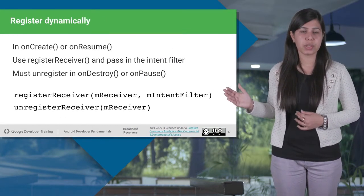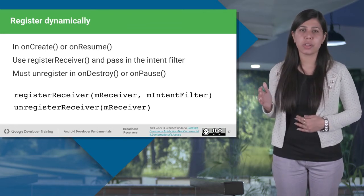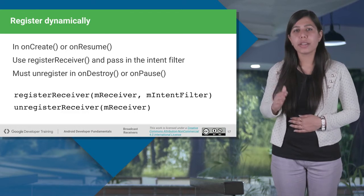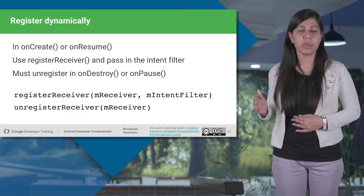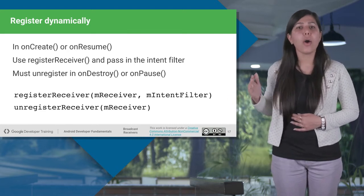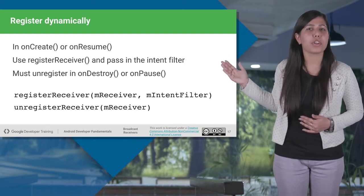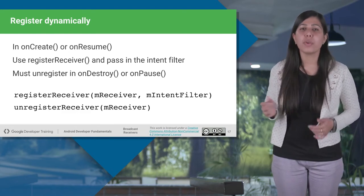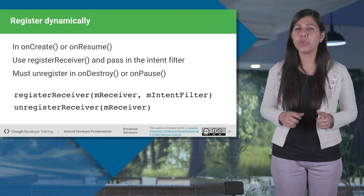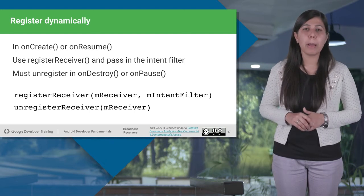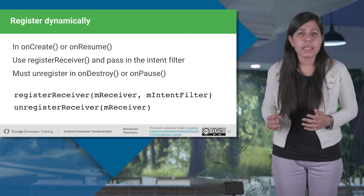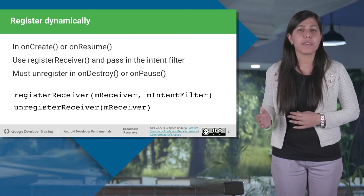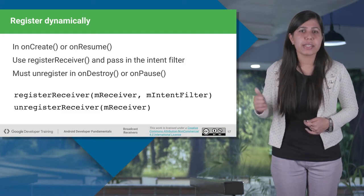Alternatively, to static registration, you can also register and unregister a receiver at runtime via the context class — using the registerReceiver method either in onCreate or in onResume activity methods, and the unregisterReceiver method either in onDestroy or in onPause activity methods. You can see the code snippet at the bottom of the slide. Do not forget to unregister a dynamically registered receiver using the unregisterReceiver method. If you forget this, the Android system reports a leaked broadcast receiver error. For instance, if you registered a receiver in the onResume method of your activity, you should unregister it inside the onPause method.